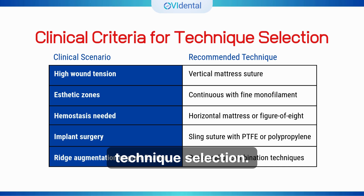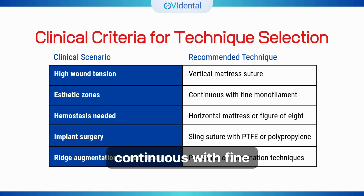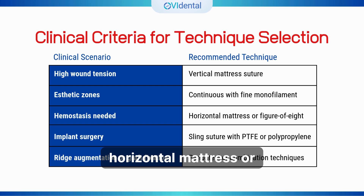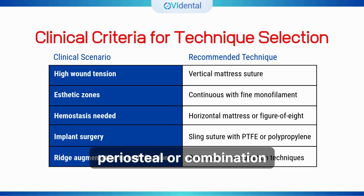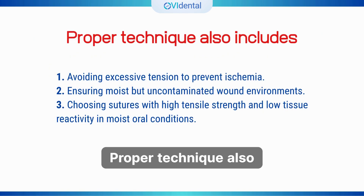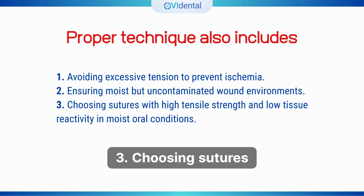Clinical criteria for technique selection. High wound tension: vertical mattress suture. Aesthetic zones: continuous suture with fine monofilament. Hemostasis needed: horizontal mattress or figure of 8. Implant surgery: sling suture with PTFE or polypropylene. Ridge augmentation or graft fixation: periosteal or combination techniques. Proper technique also includes: avoiding excessive tension to prevent ischemia, ensuring moist but uncontaminated wound environments, and choosing sutures with high tensile strength and low tissue reactivity in moist oral conditions.